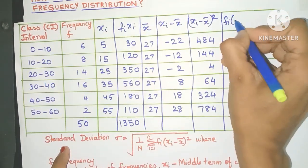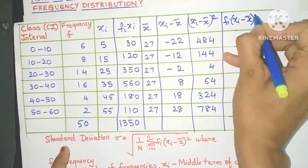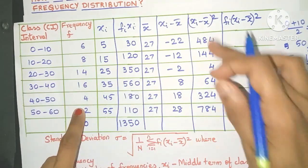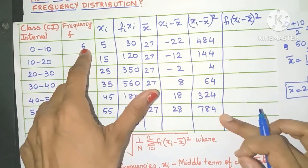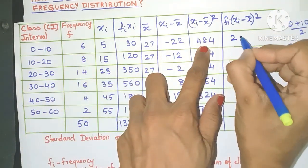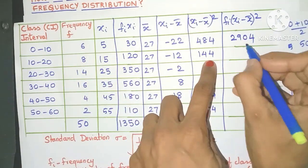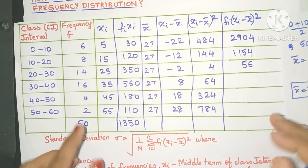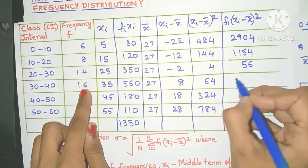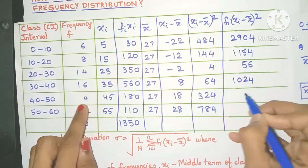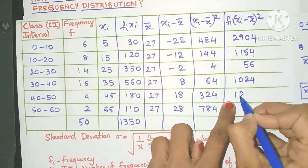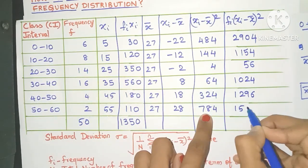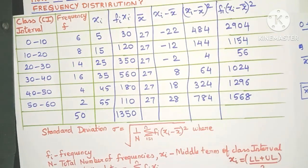Again, if we look at the formula, we need to multiply this term with the fi value. So that will be the next column over here. So which are the columns to be chosen? This frequency column and this column over here. So 6 into 484. I've already done the calculation, so I'm just copying it as it is. Please use ample rough space to do the calculation so that you get the answers correct. So this will be 2904, 1154, 144, 4, 1024, 1296, and here 2 into 784 will be 1568.